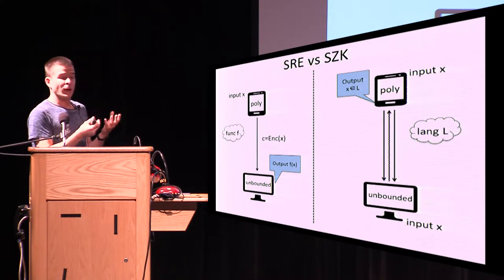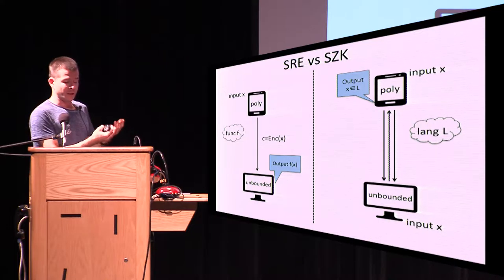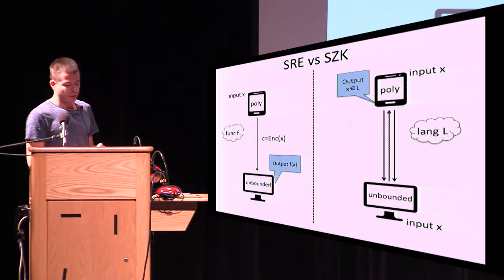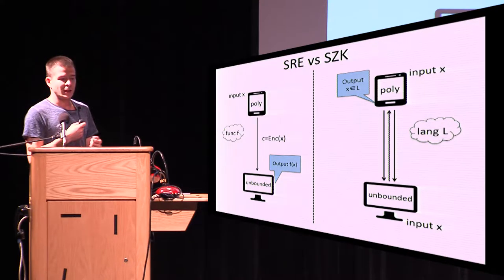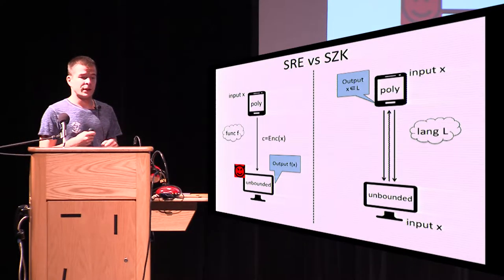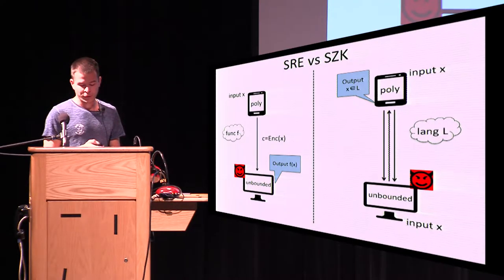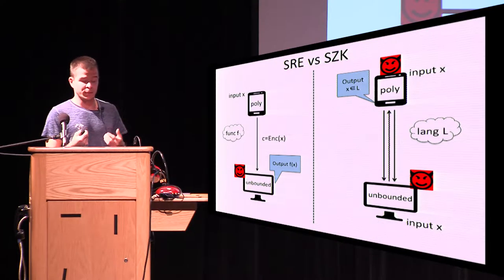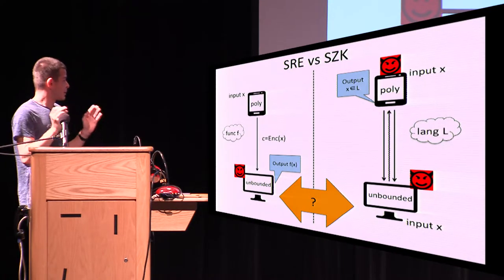The goal of this talk is to compare these two complexity classes SRE and SZK. The two settings are quite similar syntactically. The main difference is that in the SRE setting there is no interaction — just a single short message sent from the client to the server — while in the SZK setting there is interaction. The second difference is that in SRE you want security against a malicious server, whereas in SZK both the server and the client can be malicious.